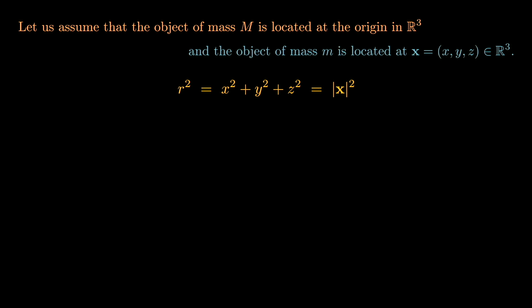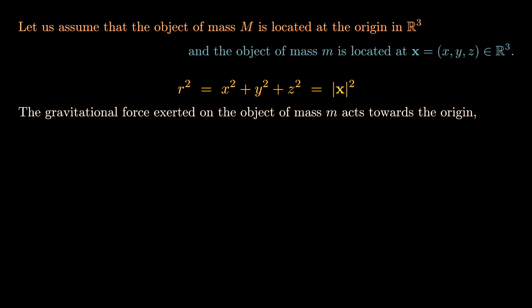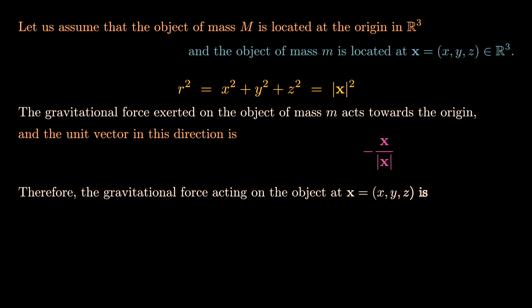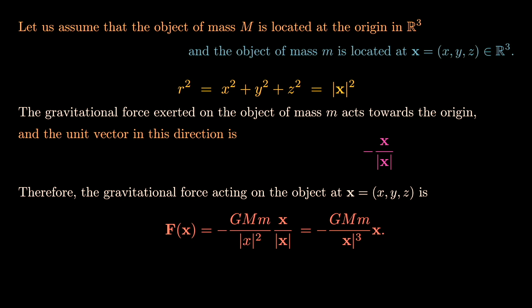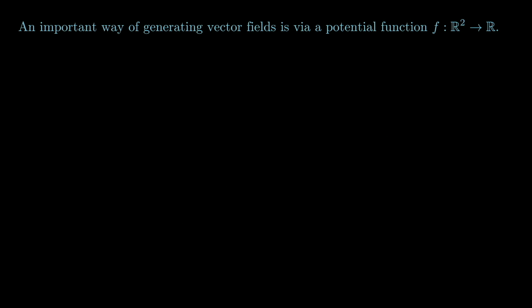The gravitational force on the object at x acts toward the origin; the unit vector in that direction is x/|x|, with a minus sign since it points inward. So the gravitational force is F(x) = -GmM/|x|² · (x/|x|), which simplifies to F(x) = -GmM/|x|³ · x.